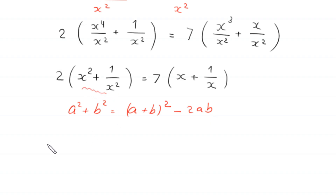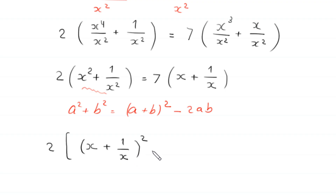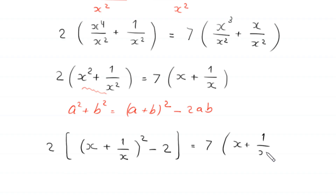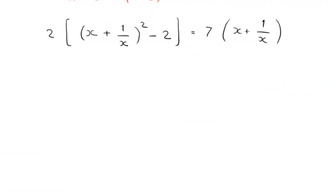After dividing by x squared, the left side becomes 2 times (x plus 1 over x) squared minus 2, equal to 7 times (x plus 1 over x). We now substitute t for x plus 1 over x.